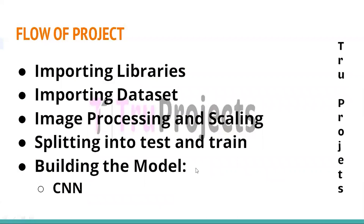The fifth step is building the model. The deep learning CNN model is built with an architecture designed for image forgery detection. Convolutional layers detect local patterns and features using filters or kernels to scan the image and create feature maps. Pooling layers reduce spatial dimensions to retain important information while reducing computational complexity. Fully connected layers combine extracted features to make final predictions, learning complex relationships between features and the presence of forgery. The CNN is trained using a large labeled dataset through back propagation.